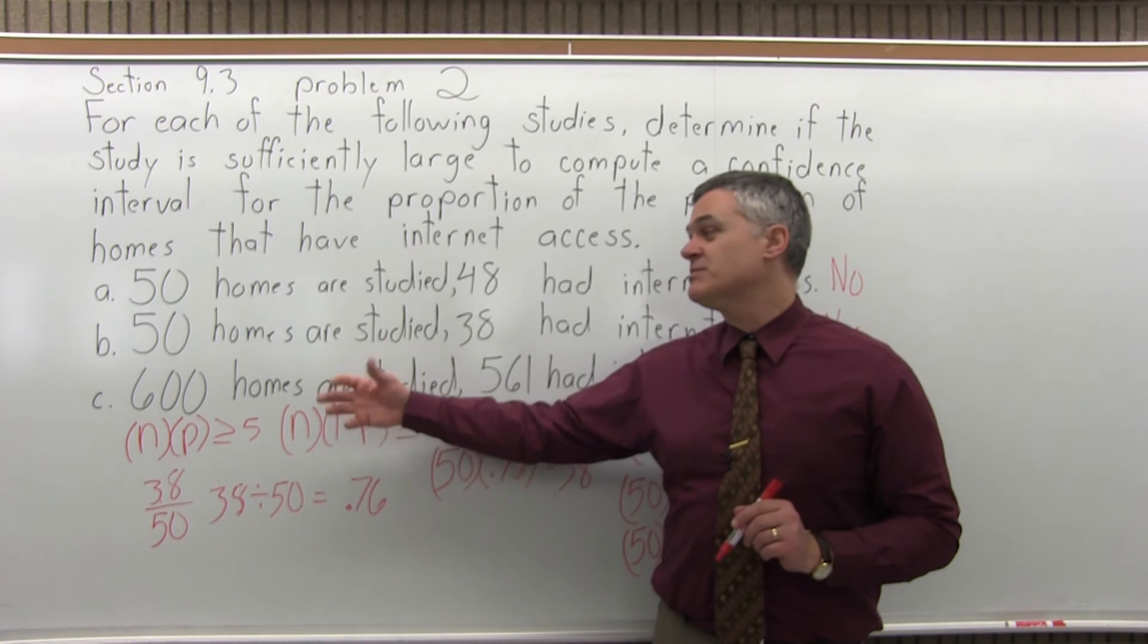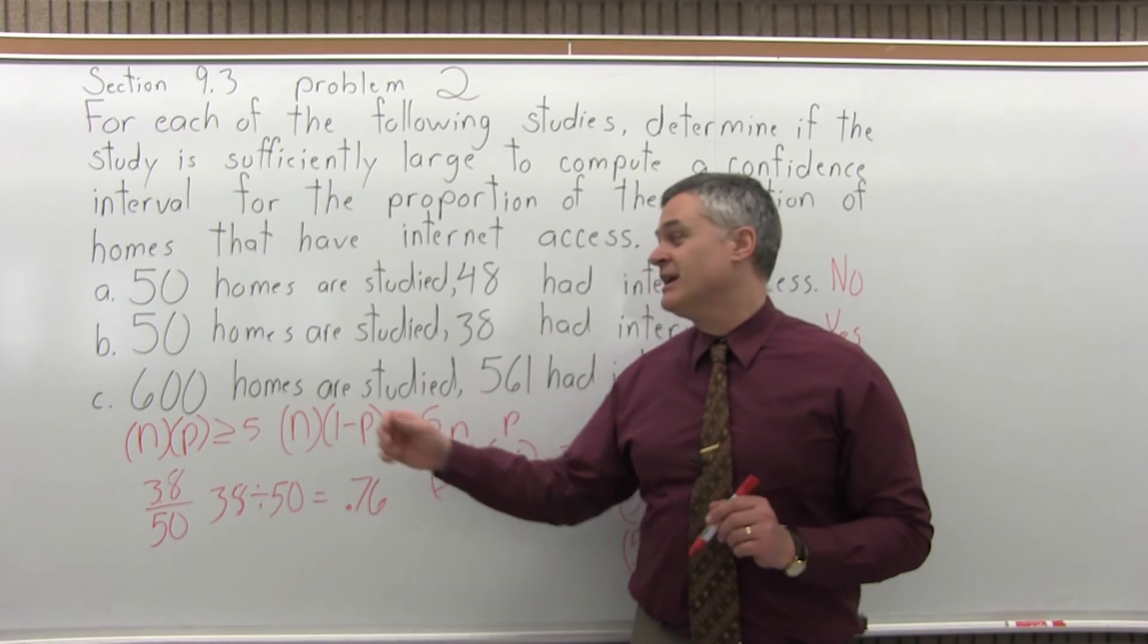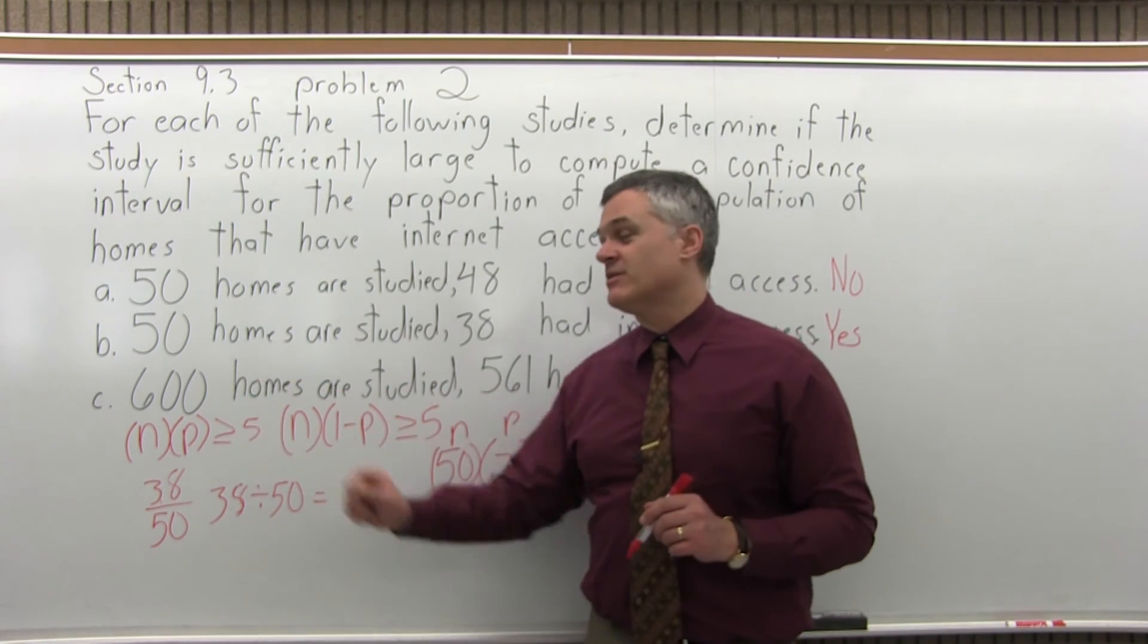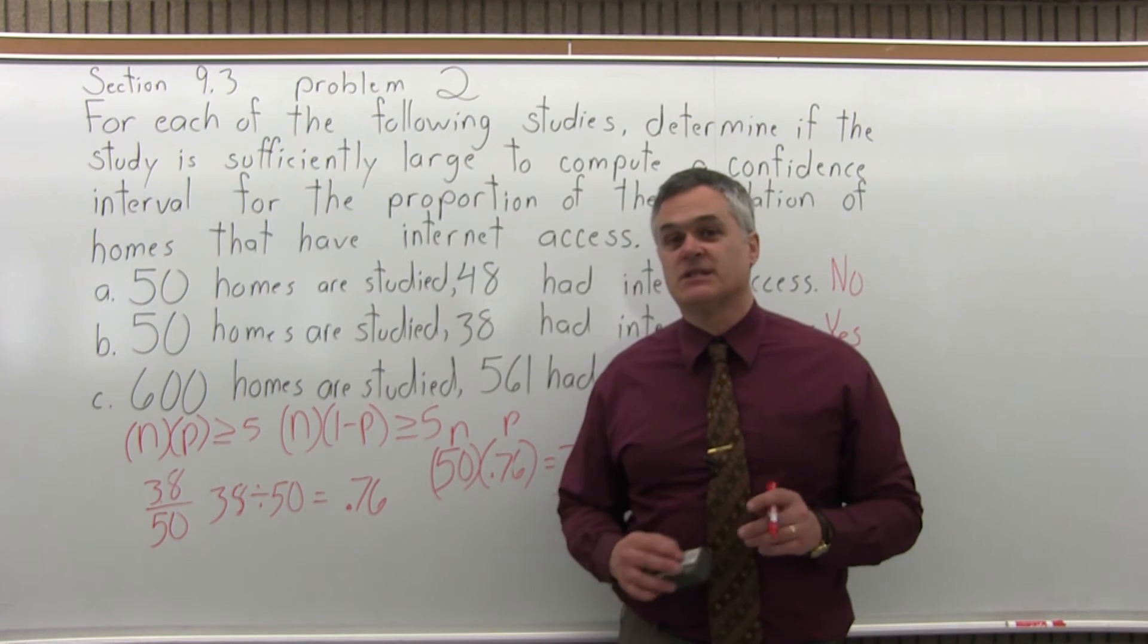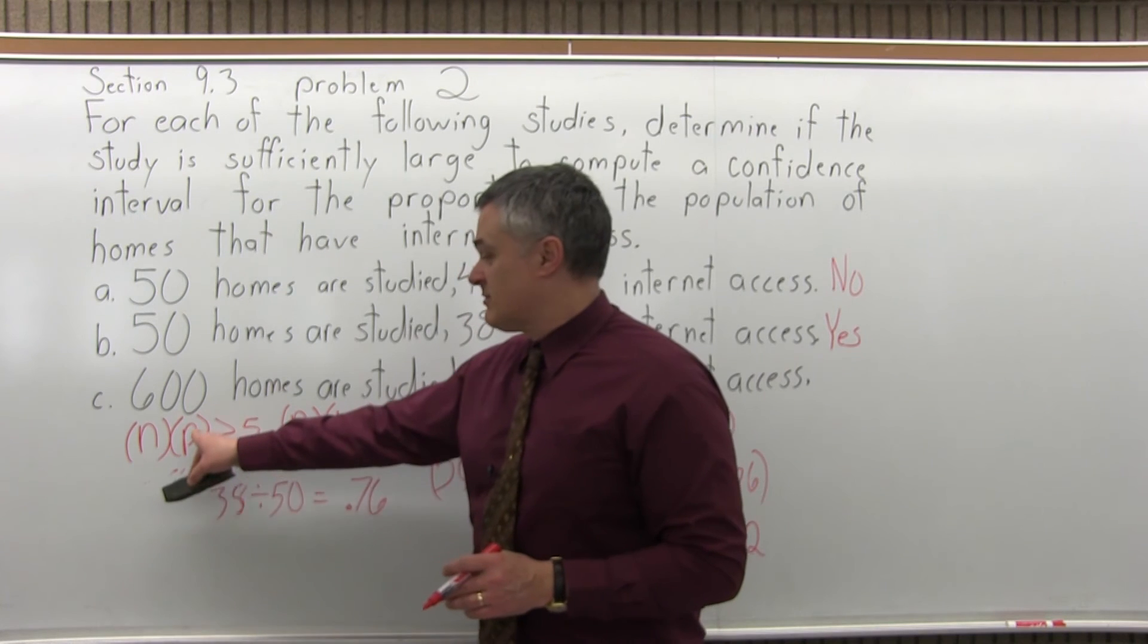And then c, 600. So, just because the number has gotten bigger, that's not going to be a guarantee that it's a big enough study. It's that ratio. Again, 561 is getting close to the whole 600. Is that sufficiently large to make a confidence interval for the population proportion?